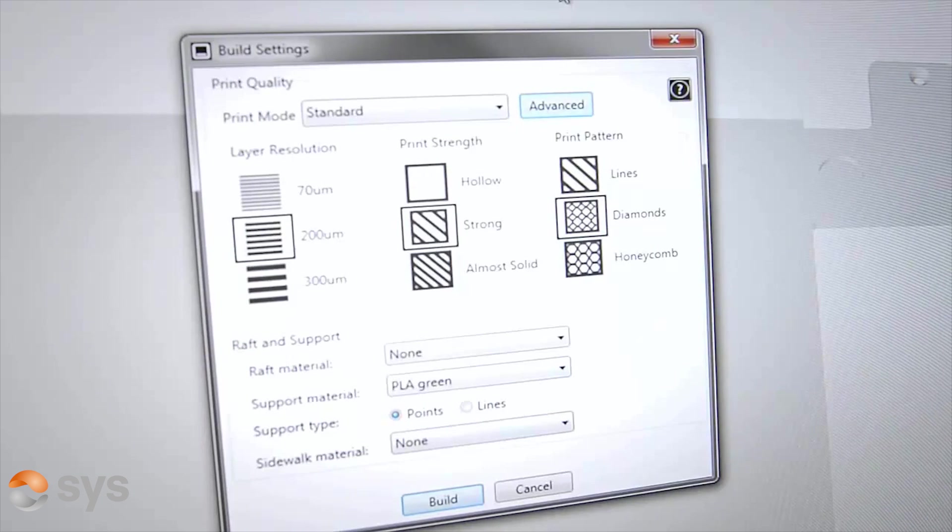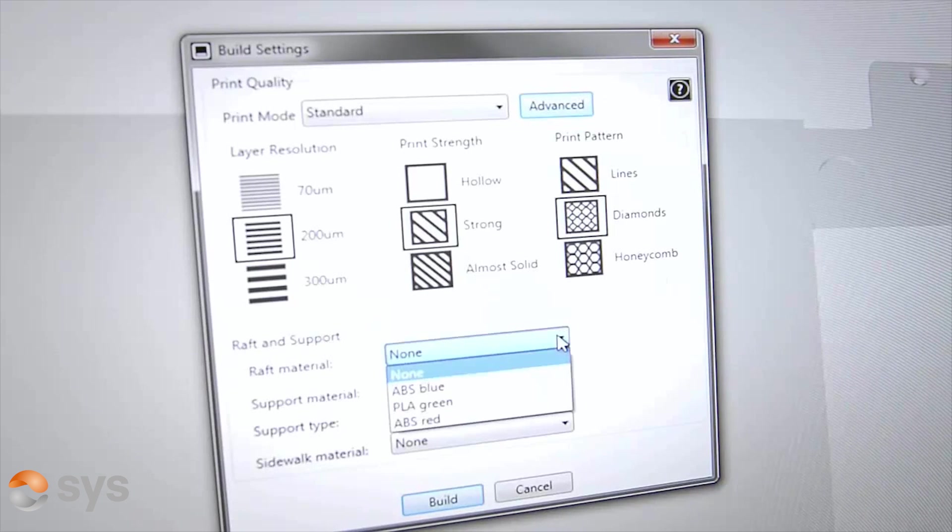Looking at the layer resolution, we see from the thinnest setting of 70 microns versus on the SE 254 microns. The default setting is 200 microns. In addition, there is a wide range of print strength and pattern settings for the model construction. Also we noted control over the raft materials as well as support type using either points or lines to attach the support material.